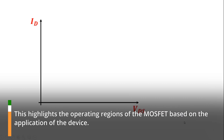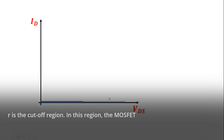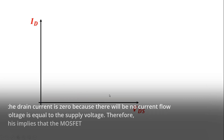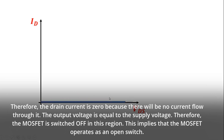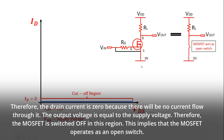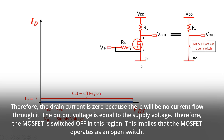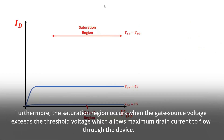The first region considered is the cutoff region. In this region, the MOSFET has no input gate voltage; therefore, the drain current is zero because there will be no current flow through it, and the output voltage is equal to the supply voltage. Therefore, the MOSFET is switched off in this region, implying that it operates as an open switch. The saturation region occurs when the gate-source voltage exceeds the threshold voltage, which allows maximum drain current to flow through the device.